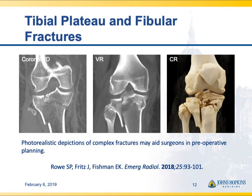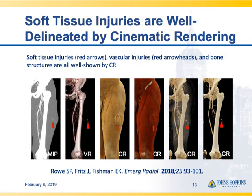Here's an example of a Schatzker type 6 fracture of the tibial plateau. Volume rendering certainly shows this is an extensively comminuted fracture with numerous fragments, but with the shadows that create a sense of where each object is relative to others, you get a much better sense of the fracture in the cinematic rendered image.